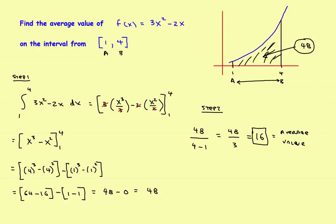Graphically, if you go up to about 16 on the graph and draw a horizontal line straight across, that represents the average value. This function on the interval from one to four has an average value of 16. That's a non-trig example.